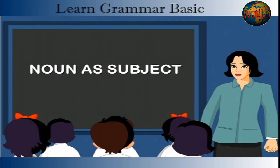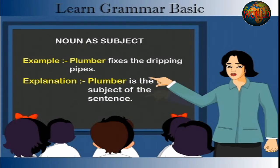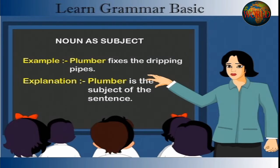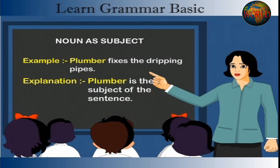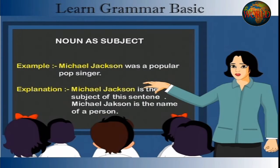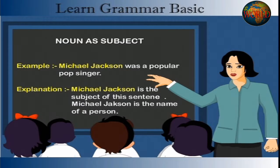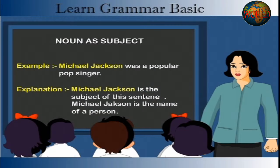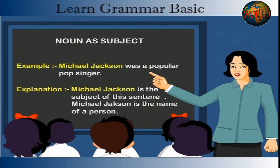Noun as Subject. Example: The plumber fixes the dripping pipes. Explanation: Plumber is the subject of the sentence. Example: Michael Jackson was a popular pop singer. Explanation: Michael Jackson is the subject of this sentence. Michael Jackson is the name of a person.